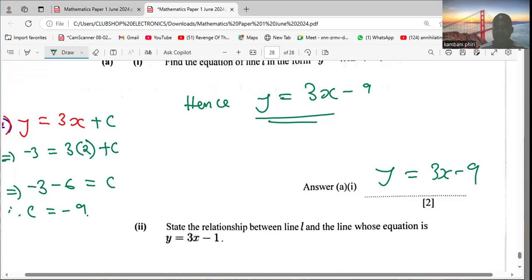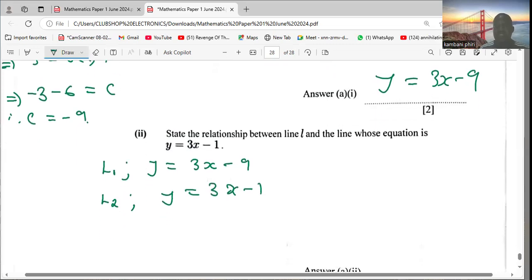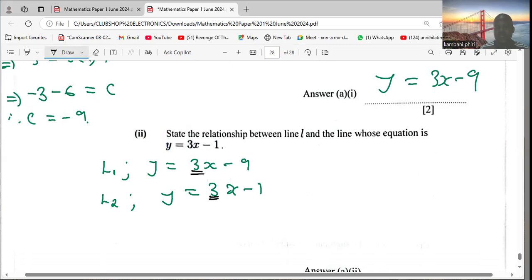Part (ii): State the relationship between line l and the line whose equation is y = 3x - 1. So we have line l, the equation is given as y = 3x - 9. Now what is the relationship between these two? We're able to identify that the gradients here are the same. And if the gradients are the same, what is it that we're able to conclude?